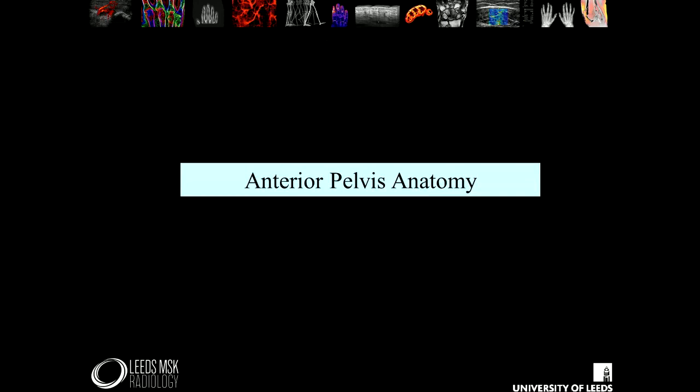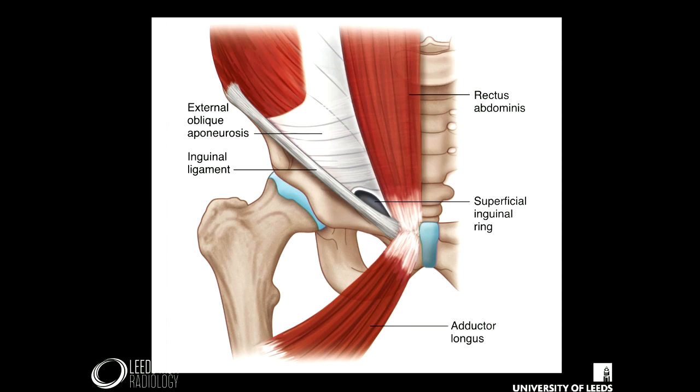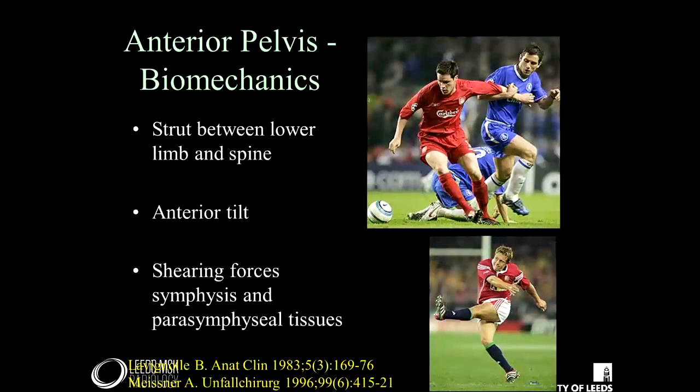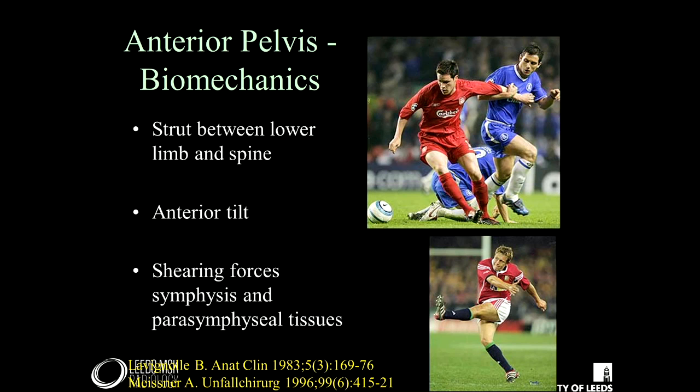Let's first look at the anterior pelvis anatomy. Looking at anatomical texts, it can seem quite simplistic, with well-defined junctions where muscles attach around the symphysis pubis and the anterior pelvis. But it's more complex than this. If we first look at the biomechanics of that area — what does the anterior pelvis do? It acts as a mechanical strut between the lower limb and the remainder of the spine, acting through the anterior pelvis, transmitting to the spine.